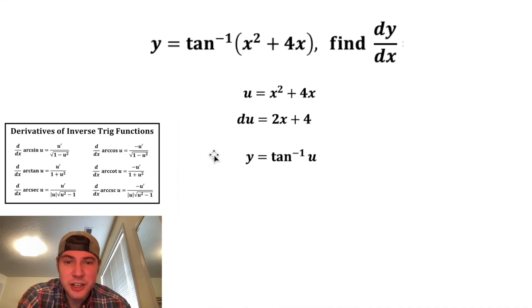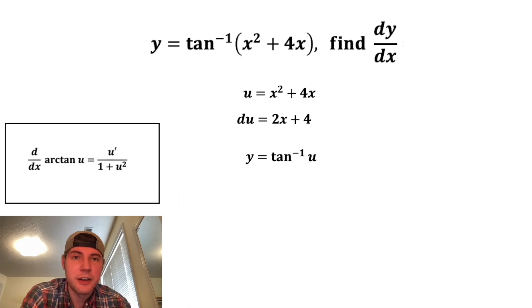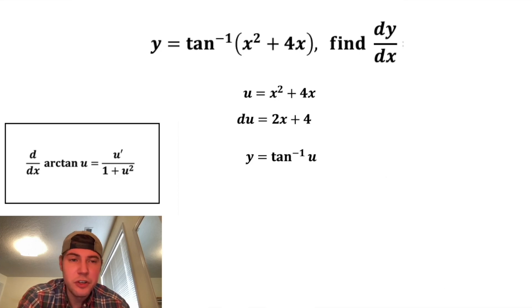And since we're doing tangent inverse of u, we're gonna zoom in on this derivative of arctan of u. This says that the derivative of arctan of u is equal to the derivative of u over 1 plus u squared. So up here, dy/dx would equal u prime over 1 plus u squared.